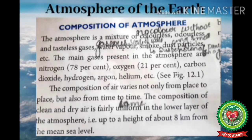The atmosphere is a mixture of colorless, odorless, and tasteless gases, water vapor, smoke, dust particles, etc. Colorless means without any color; odorless means without any smell; water vapor means the gaseous state of water. The main gases present in the atmosphere are nitrogen (78 percent), oxygen (21 percent), carbon dioxide, hydrogen, argon, helium, etc. The composition of clean and dry air is fairly uniform in the lower layers of the atmosphere, referring to the troposphere, which extends up to a height of about 8 kilometers from the mean sea level.